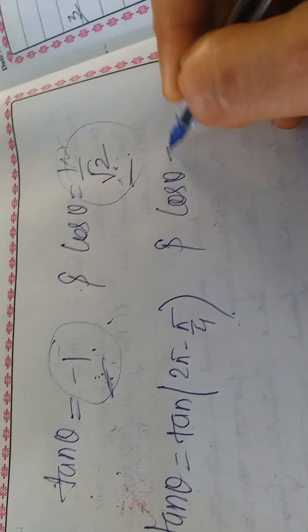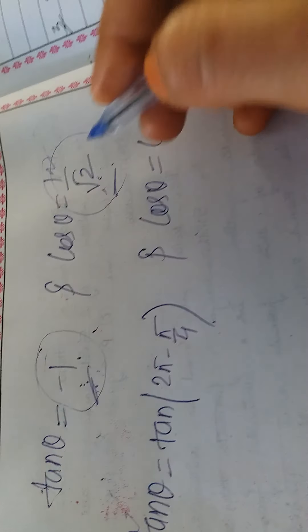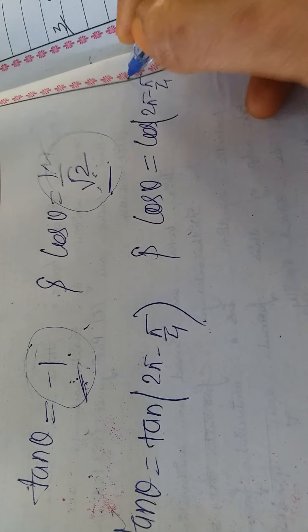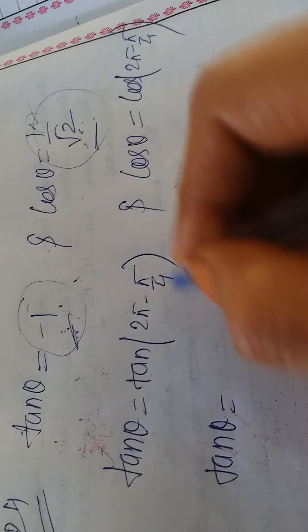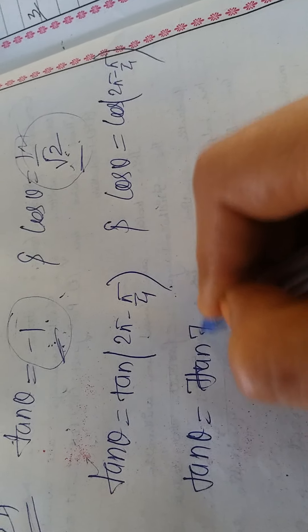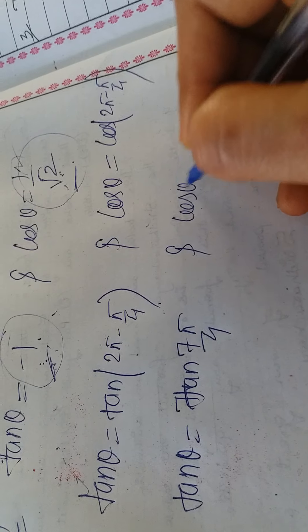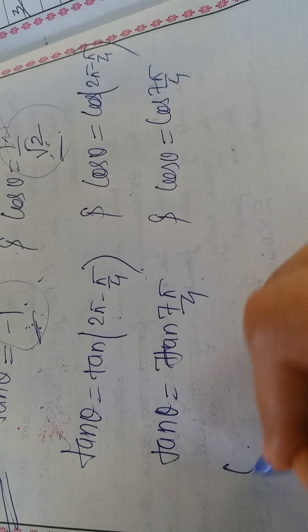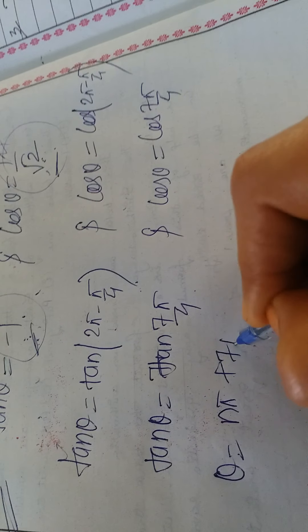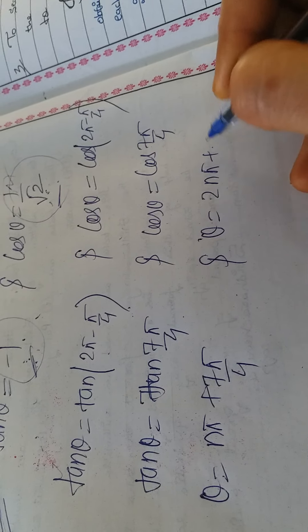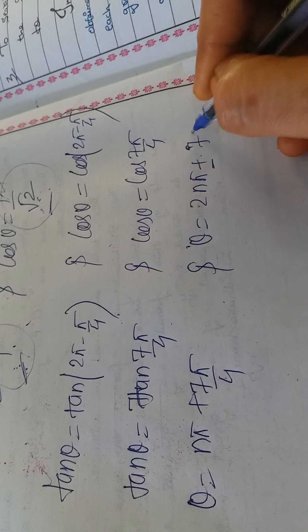Similarly, cosθ = 1/√2 corresponds to π/4, but in the fourth quadrant: cos(2π - π/4) = cos(7π/4). So both equations give the same reference angle 7π/4. Applying formulas: tanθ = tan(7π/4) gives θ = nπ + 7π/4, and cosθ = cos(7π/4) gives θ = 2nπ ± 7π/4.